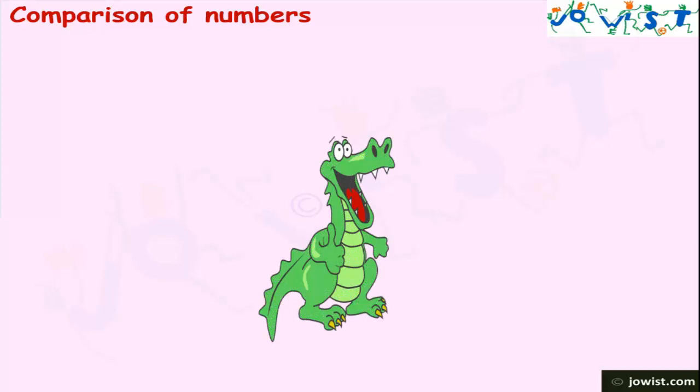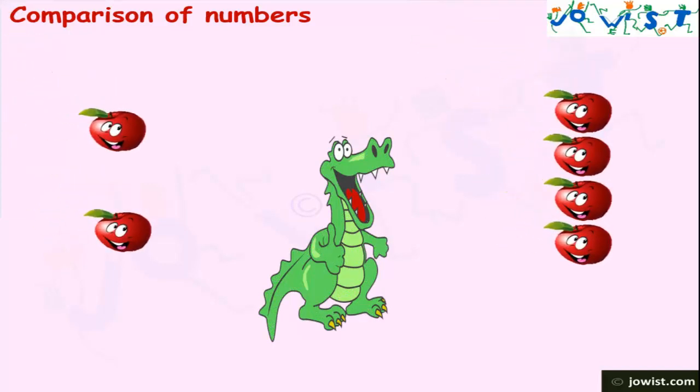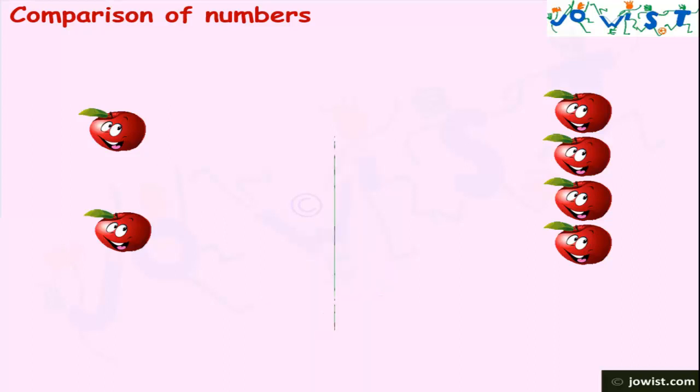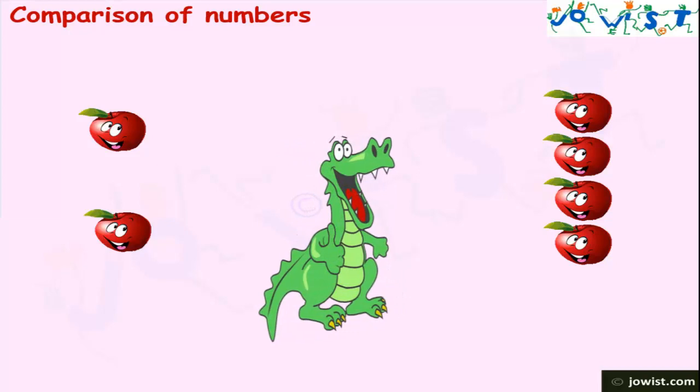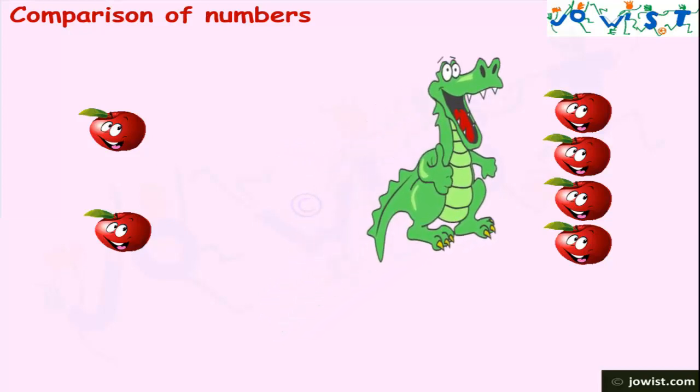It walked some distance and found more apples. One side had four apples and the other side had two apples. It saw both sides and went towards four apples.